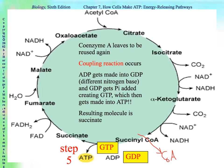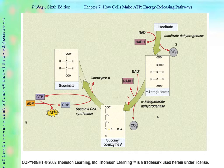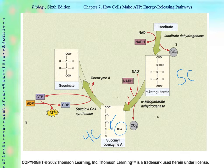In step five, coenzyme A leaves and a coupled reaction occurs. ADP is going to get made into GDP — which is the same thing as ADP except it's a different nitrogen base — and then GDP gets the inorganic phosphate added to it, creating GTP, which can then be converted into ATP. All of those coupling steps turn succinyl coenzyme A into succinate, which is still a four-carbon molecule. For the chemistry: isocitrate is decarboxylated with its enzyme, turned into alpha-ketoglutarate (five carbons), gets decarboxylated again, giving a four-carbon molecule with coenzyme A attached via a very unstable bond, which through the coupled reaction turns into succinate, a four-carbon molecule.